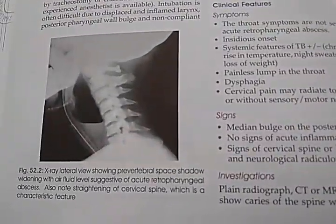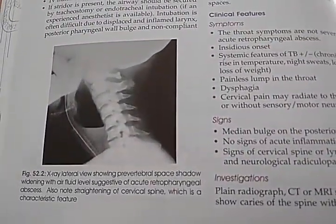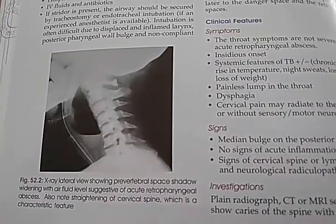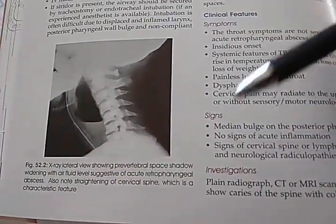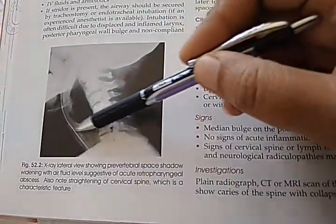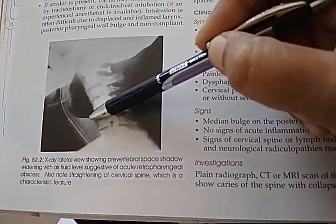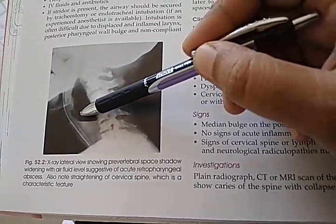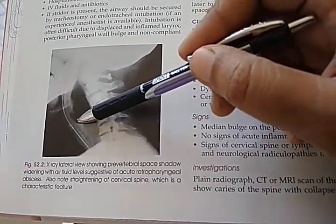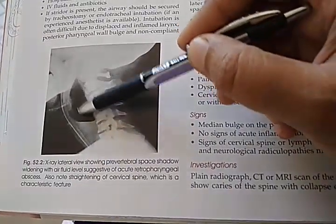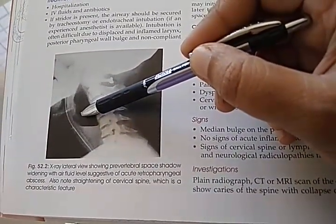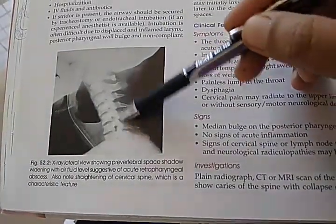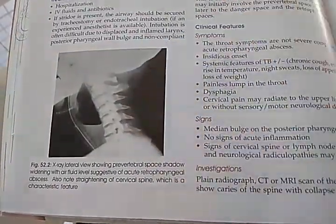X-ray lateral view showing prevertebral space shadow widening with air-fluid level, suggestive of acute retropharyngeal abscess. The prevertebral space, before the vertebra, shows fluid and air. Note the straightening of the cervical spine, which is a characteristic feature.